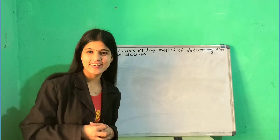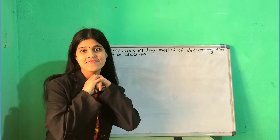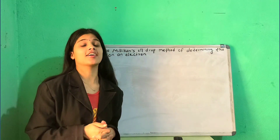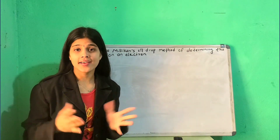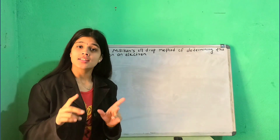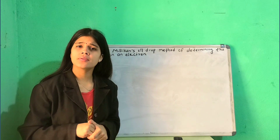The question is about the numerical type. It is very important to know the concept of the experiment. Millikan's experiment is about the discovery of the electron and its charge.